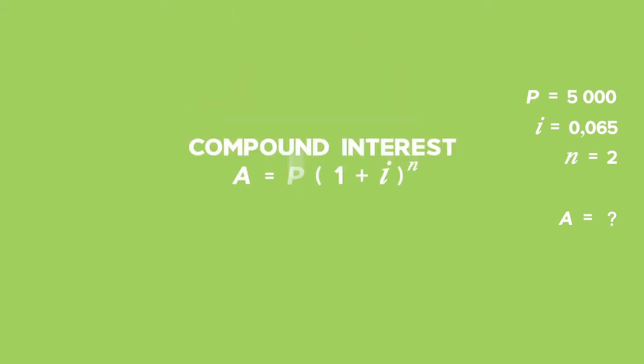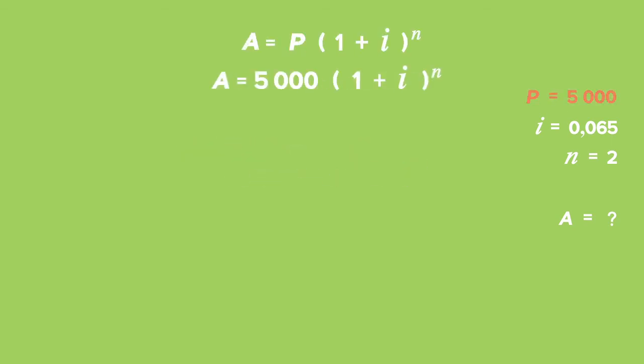Using my formula for compound interest, I substitute the values I've been given. P is equal to 5,000. Remember the formula A equals P times in brackets 1 plus i raised to the power of N. We've got the values P, i and N.